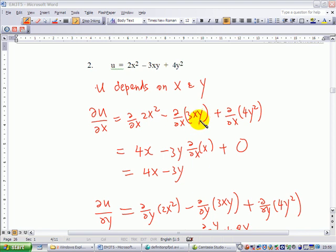Therefore, you can pull out the constant factor 3y and differentiate x with respect to x. And we know that differentiate x with respect to x is 1. Therefore, 3y times 1, you get 3y.